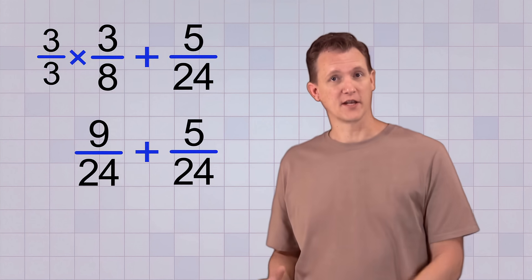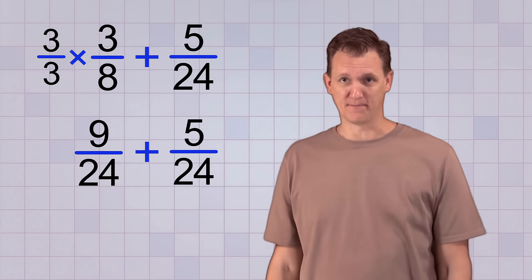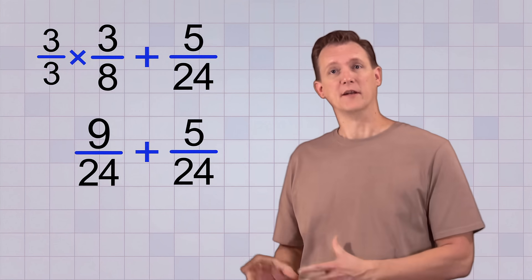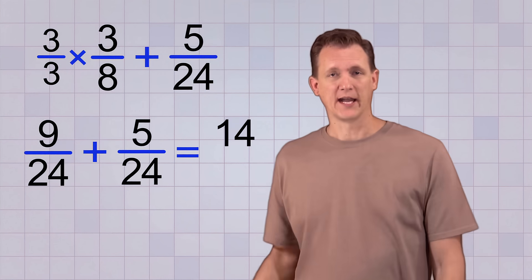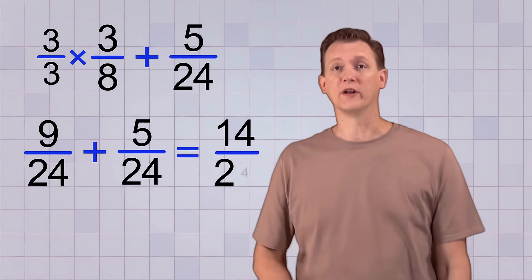Now we have like fractions, and we can use our simple procedure to add them. We add the top numbers, 9 plus 5 equals 14, and we keep the same bottom number, 24.